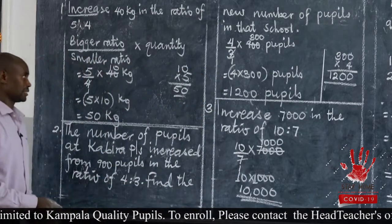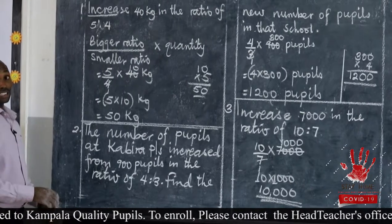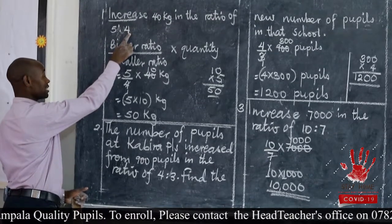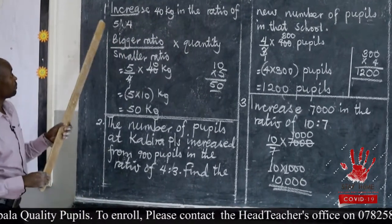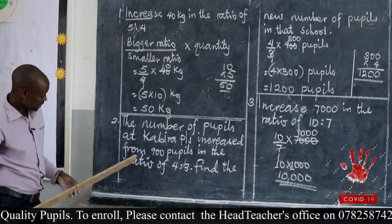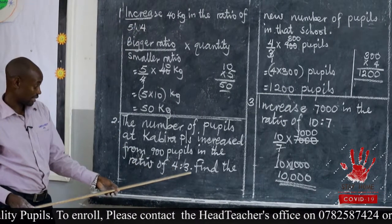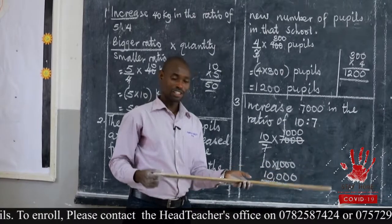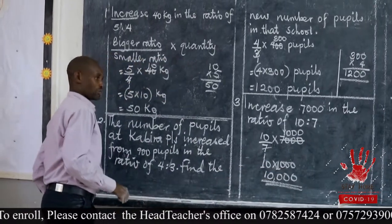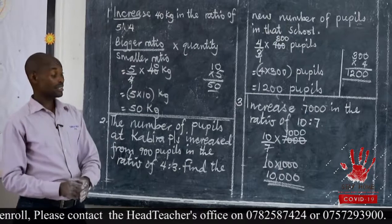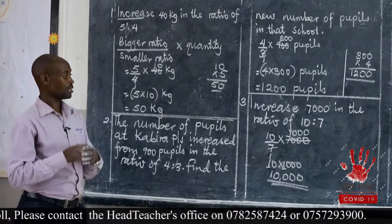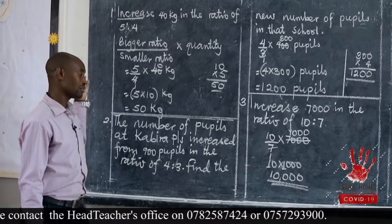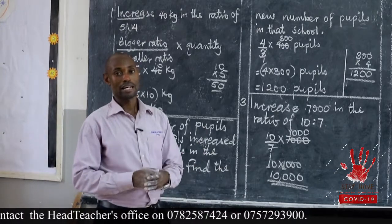If you have been very keen, you must have observed that when we are talking about increase, the first ratio part is always bigger than the second. In example 1: 5 is bigger than 4. In example 2: 4 is bigger than 3. In example 3: 10 is bigger than 7. So when we talk about increase, the first ratio part should always be bigger than the second ratio part.